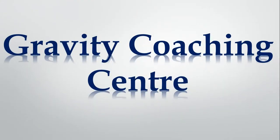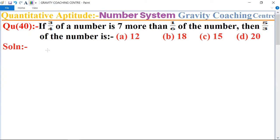Welcome to our channel Gravity Coaching Centre. Quantitative Aptitude, chapter Number System, Question number 40: If 3/4 of a number is 7 more than 1/6 of the number, then 5/3 of the number is: (a) 12, (b) 18, (c) 15, (d) 20?